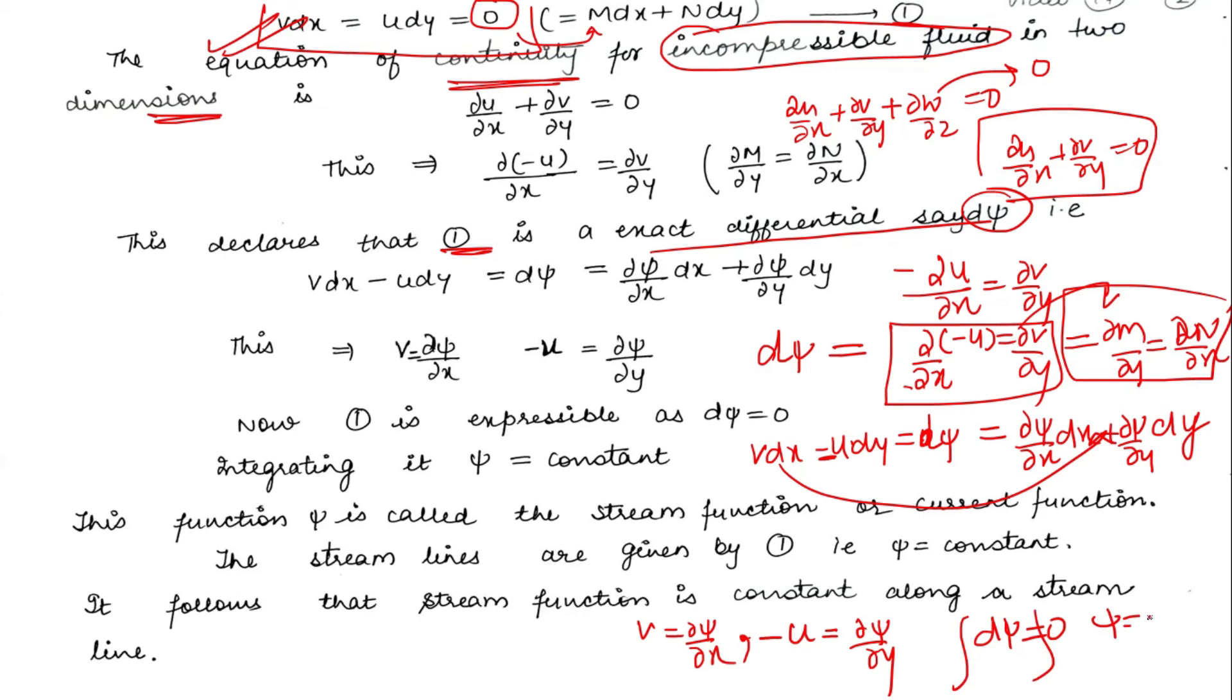psi is a constant function, which we have to equate to streamlines equations. This means that the stream function is a constant value when it is a streamline motion. So here we have to write this function psi is called the stream function or current function.